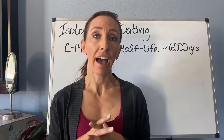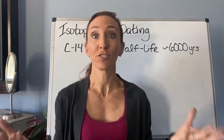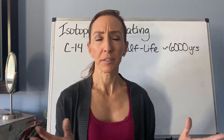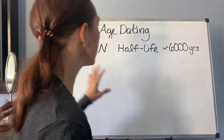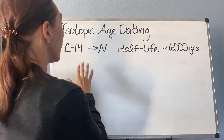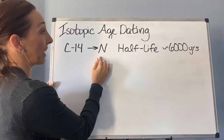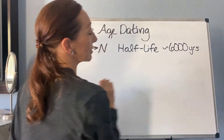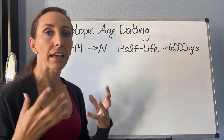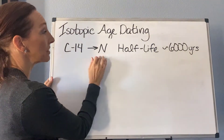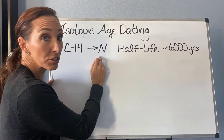The concept of half-life — the generic definition is the time it takes for half of the parent to turn into a daughter product. For example, carbon-14 is an unstable isotope that converts to nitrogen, and it has a half-life of 6,000 years. So what that means is that every 6,000 years, half of the carbon-14 is going to convert to nitrogen.